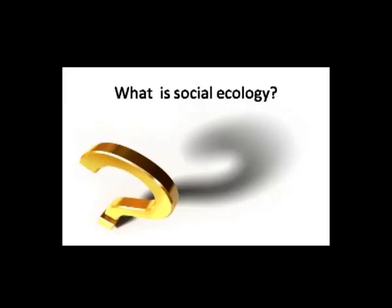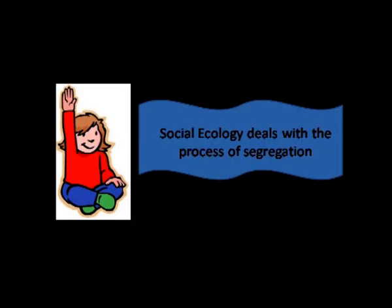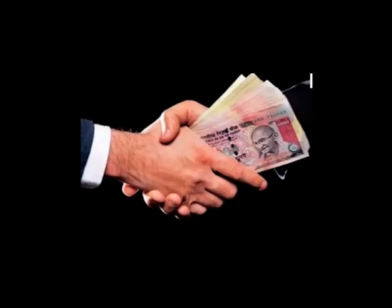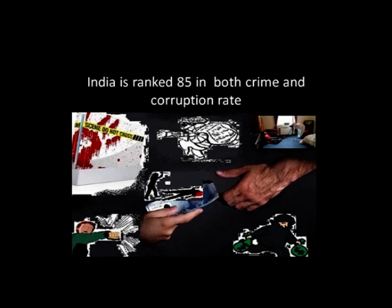Dear students, in this session we are going to learn about two socio-ecological problems: crime and corruption, and how they affect the society. Social ecology is mainly the study of social and behavioral consequences of the interaction between human beings and their environment. It mainly deals with the process of segregation. The social ecology of corruption deals with the corruption activities that risk society.